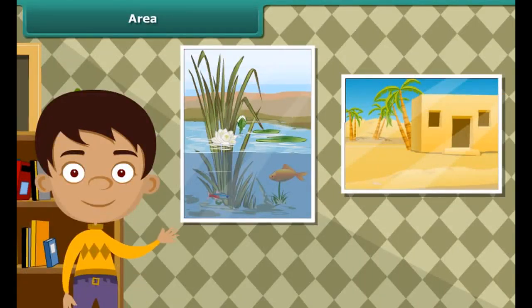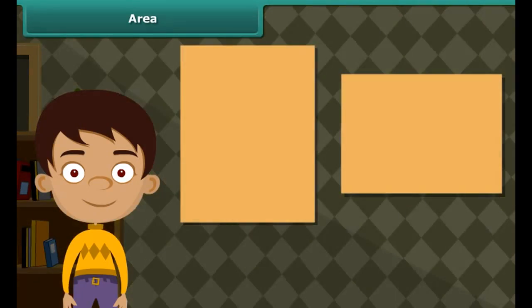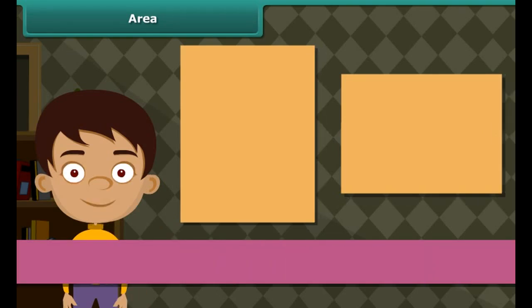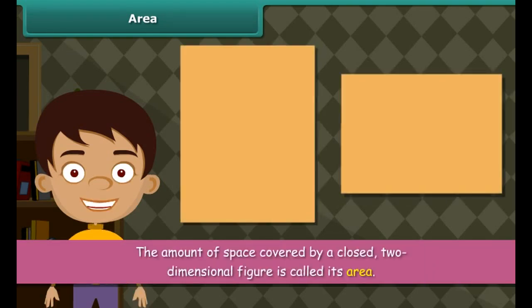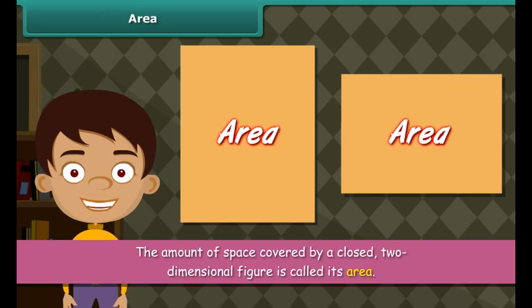Take two paintings of different sizes and compare them. The amount of space covered by the two paintings will be different, because the lengths and breadths of the two paintings are different. The amount of space covered by a closed two-dimensional figure is called its area. The area of one such figure can be different from the area of another.